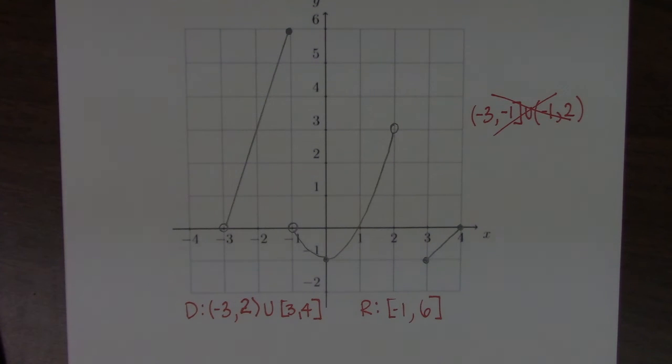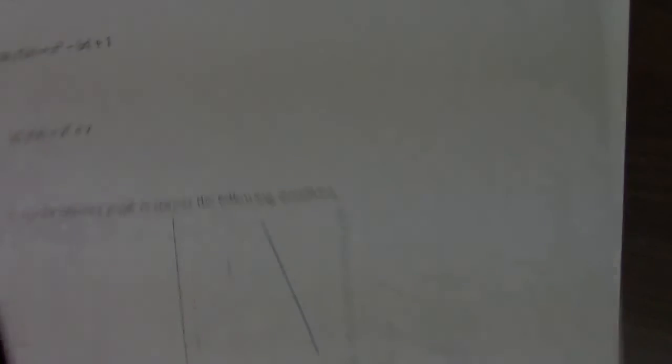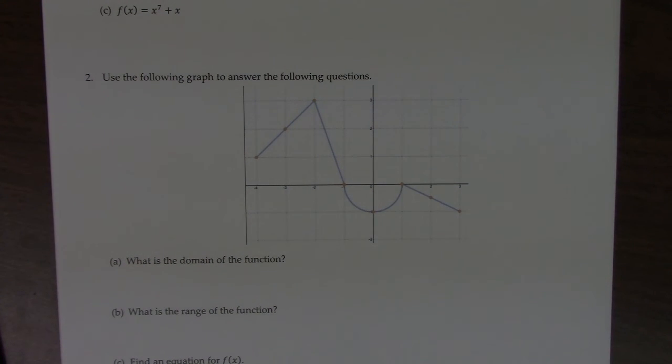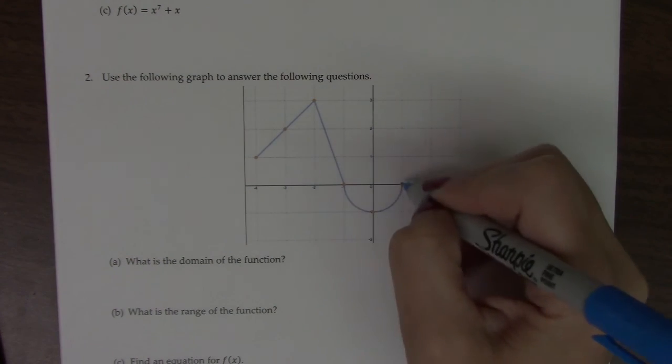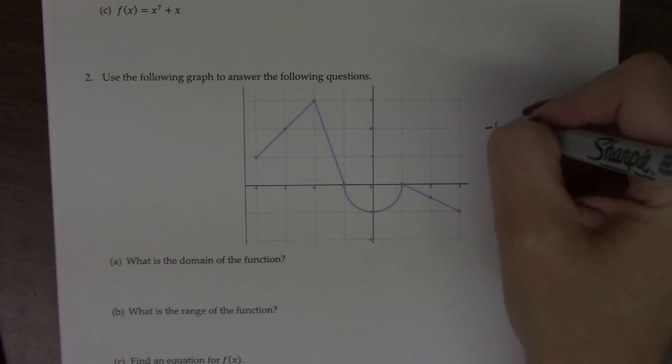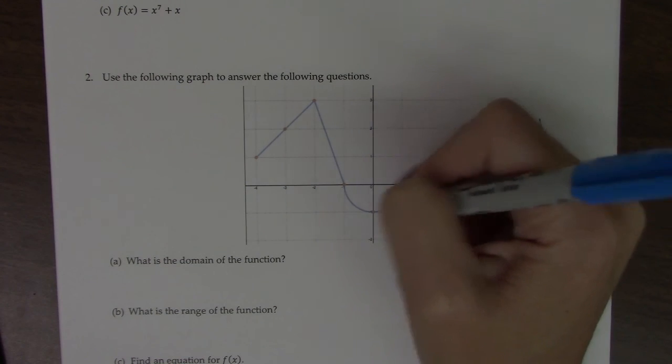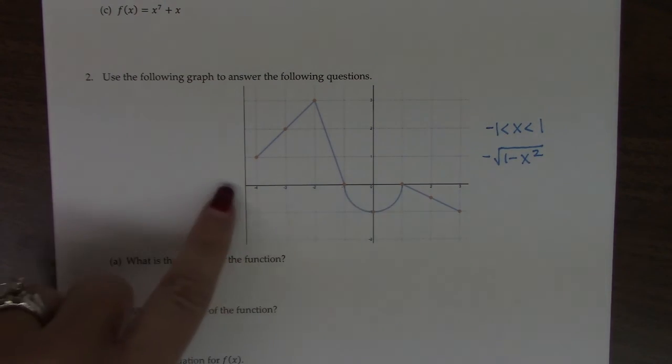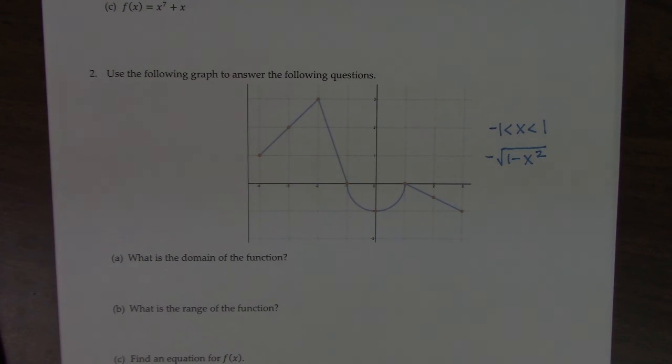Now I want to make a note on the practice on your own problem for this particular section. This piecewise graph that you're going to try to write the function for has a semicircle in it, and we actually technically aren't testing you on circles on this exam. So you still need to try to do this problem, but I'm going to give you the equation for this particular piece of the graph. So right here from negative 1 to 1, this semicircle right here, the equation is negative square root of 1 minus x squared. So don't stress on this piece. You should include it in your final answer, but you should definitely be able to create the equations of the other pieces and then find the domain and range.